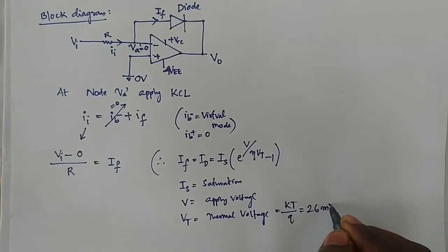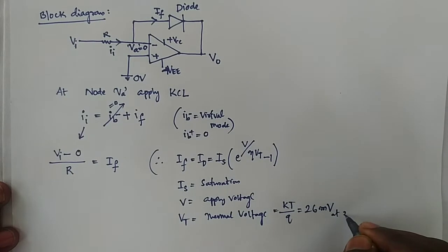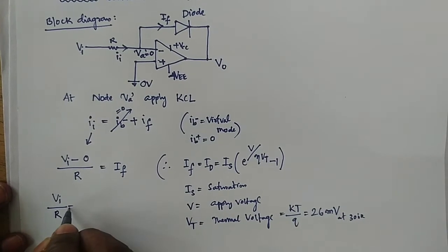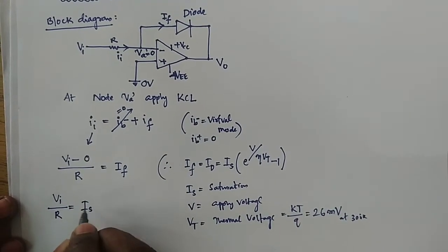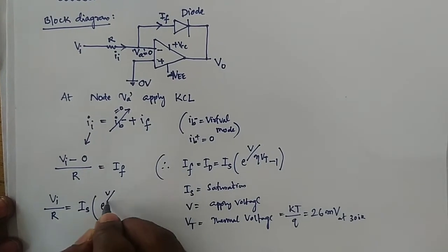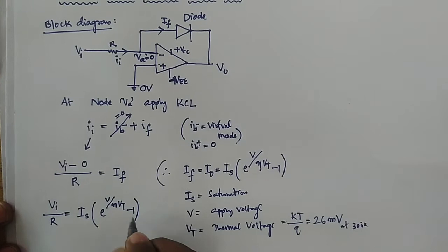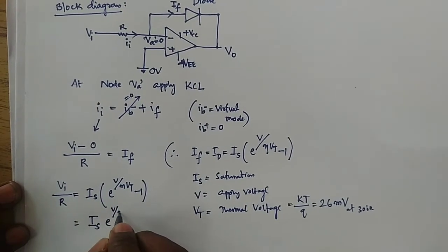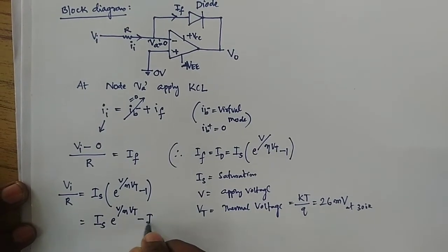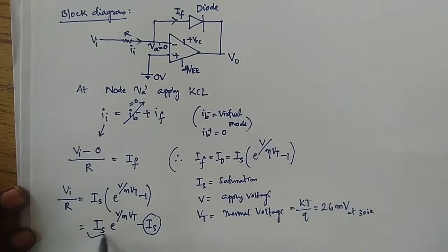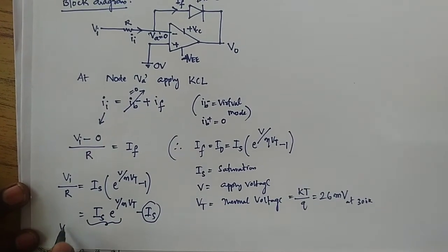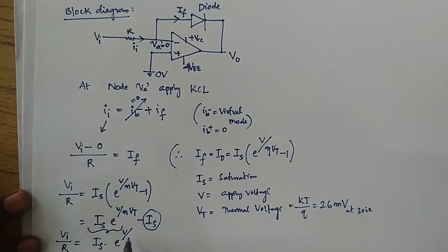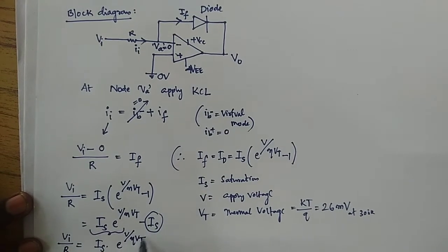The thermal voltage VT equals KT divided by Q in terms of temperature, which is 26 millivolts at 300 degrees Kelvin. So VI divided by R equals IF, which equals IS times e to the power of (V divided by Eta·VT). Since the minus 1 term is negligible, this simplifies to VI/R equals IS times e to the power of (V divided by Eta·VT).